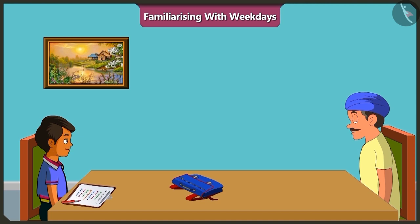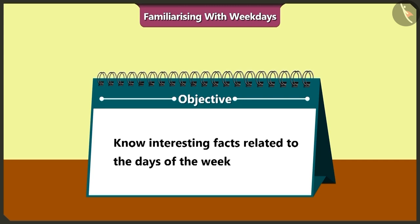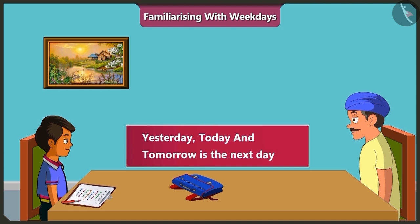Let me explain. Friends, today in this video we will learn some interesting facts related to the days of the week. The past day — yesterday — and today and the coming day — tomorrow — are not one of the days of the week. They are used to indicate the days of the week.